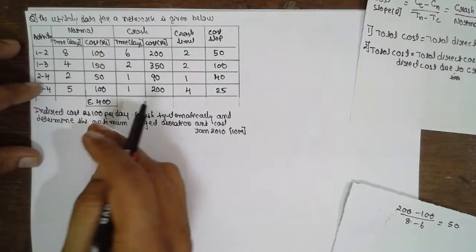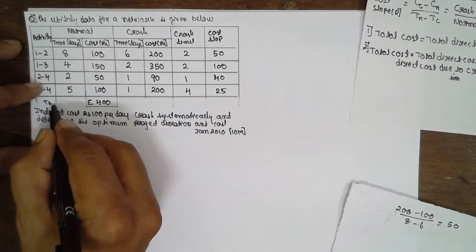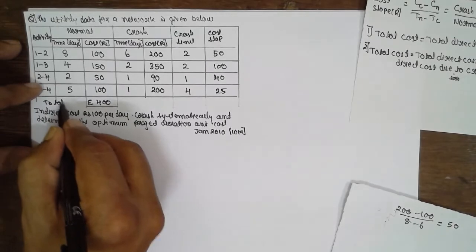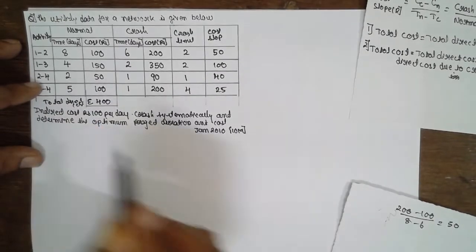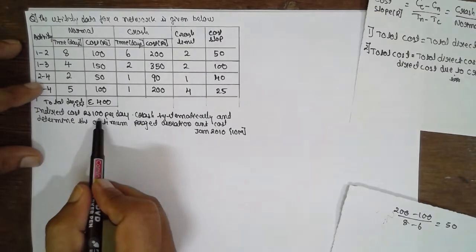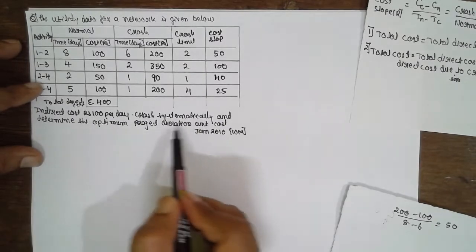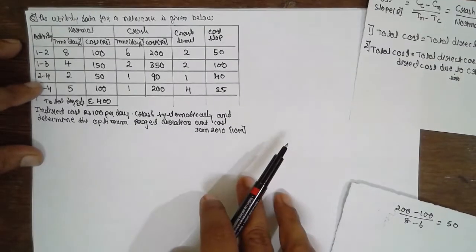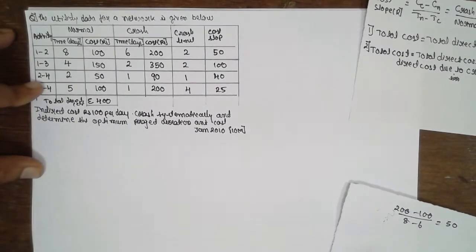We call it the total direct cost. In the problem they have given the indirect cost is 100 rupees, and we have to find out the optimum duration time and cost.